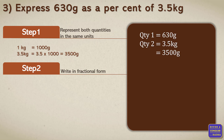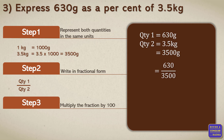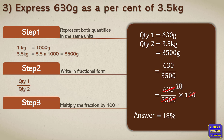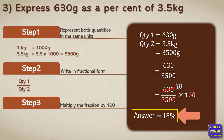Step two, we write this in fractional form: first quantity divided by second quantity, that's 630 divided by 3500. Step three, we multiply this fraction with 100. The zeros cancel, giving us 630 divided by 35, and 35 times 18 is 630. So our final answer — 630 grams as a percent of 3.5 kg — is equal to 18%. Remember, the percentage symbol is very important in the answer.